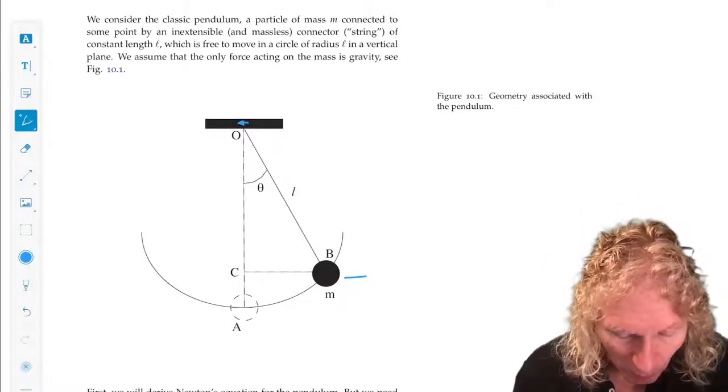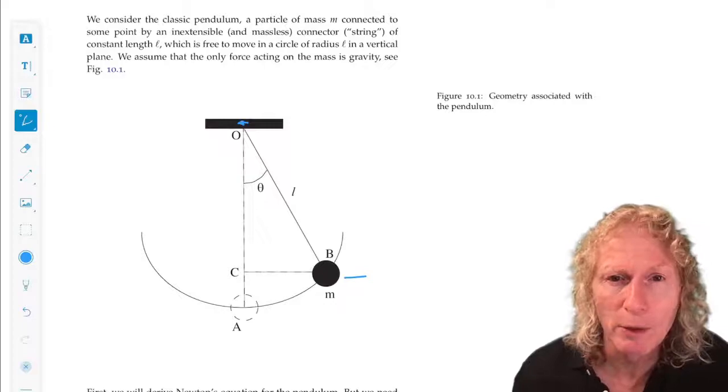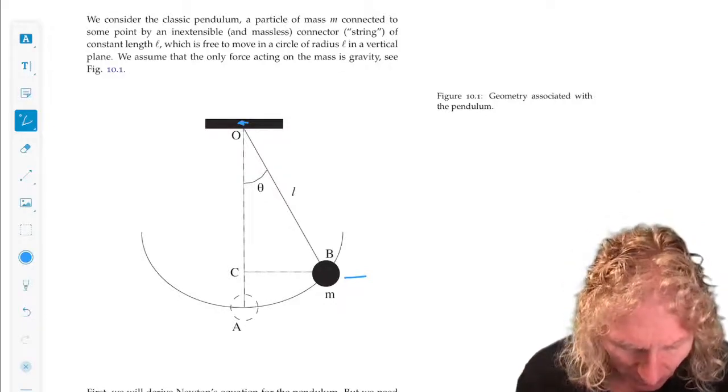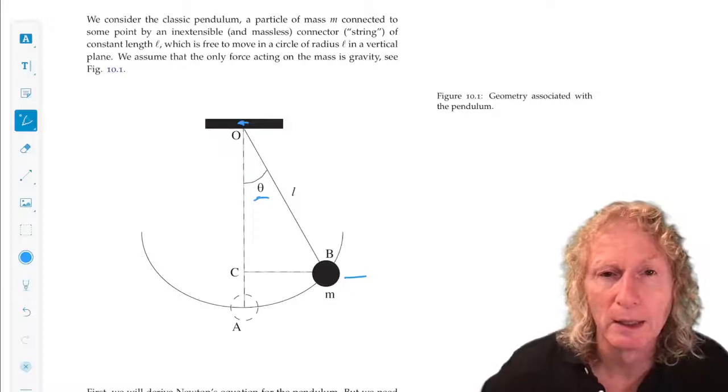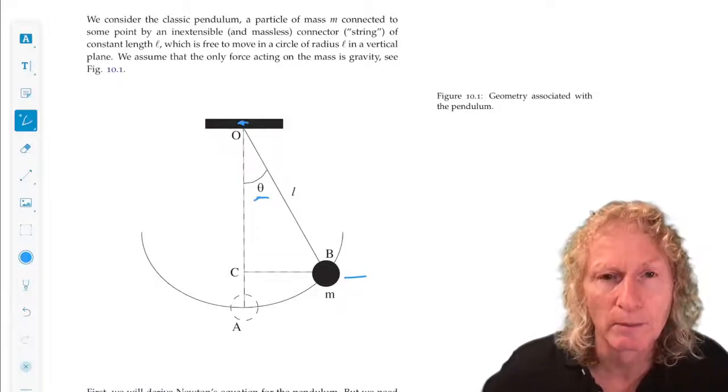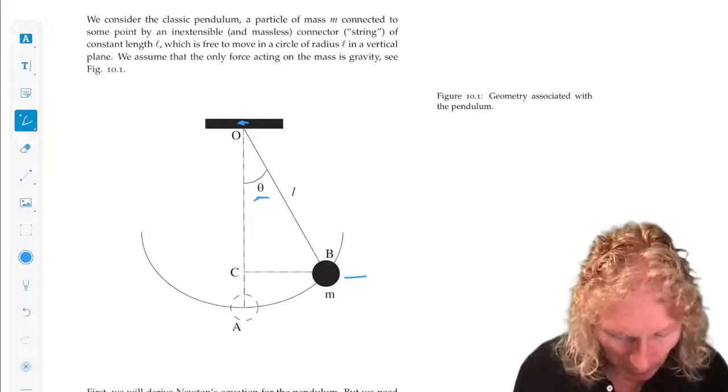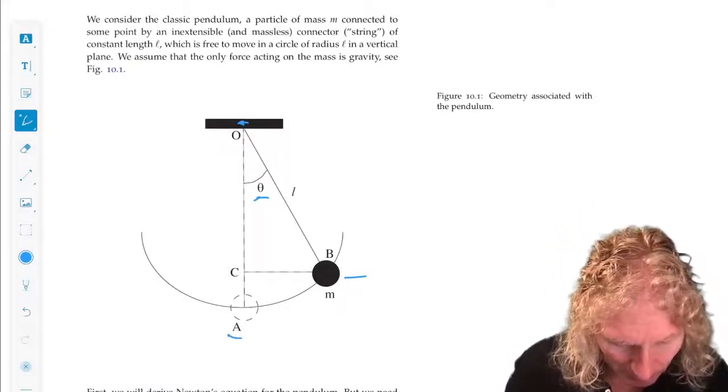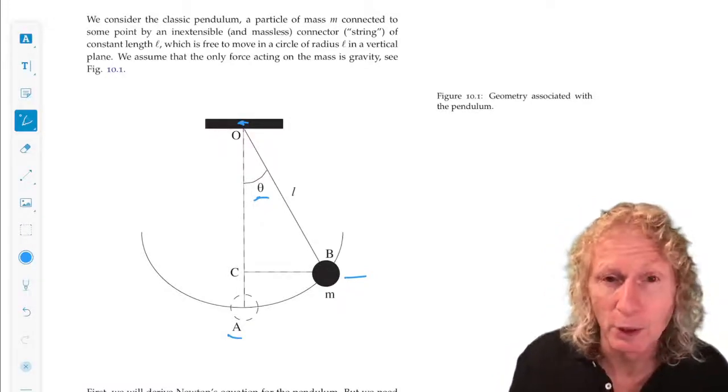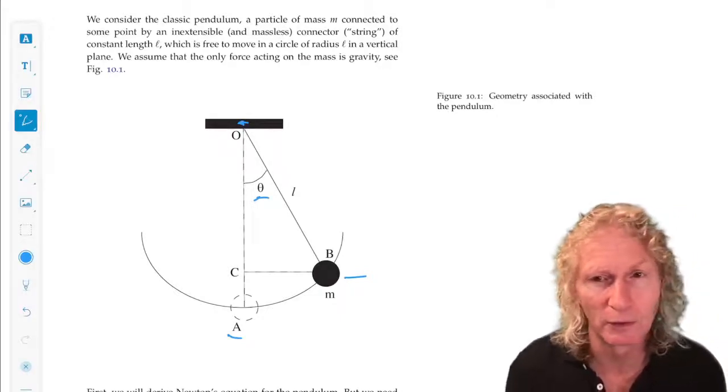So we can describe the motion of this mass by a single variable, theta, where theta is the deviation from the straight down position. So theta equals zero means the mass is at point A, and theta equal pi means it's standing straight up.